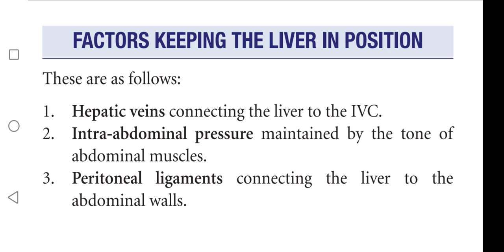Peritoneal ligaments connect the liver to the abdominal walls. So to summarize: hepatic veins connect the liver to the inferior vena cava, intra-abdominal pressure is maintained by the tone of abdominal muscles, and peritoneal ligaments connect the liver to the abdominal walls.